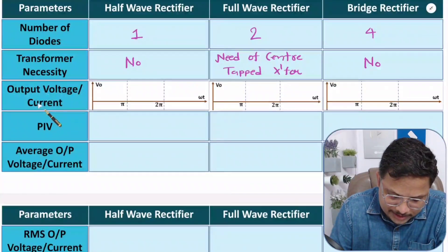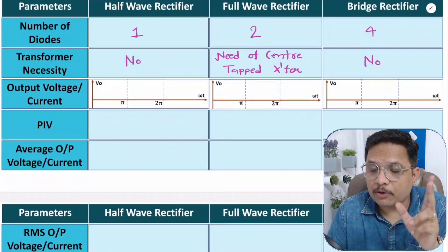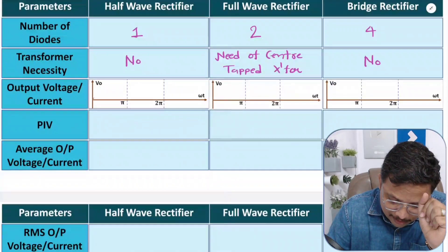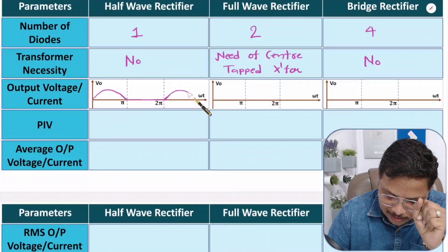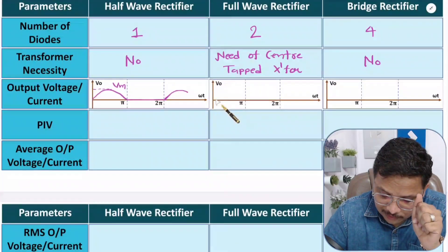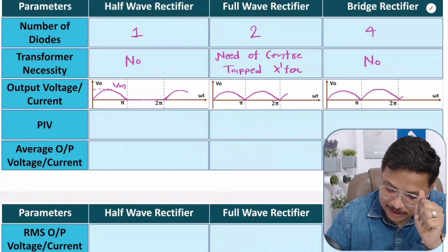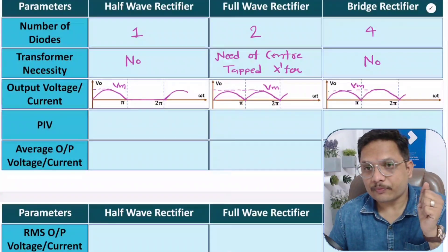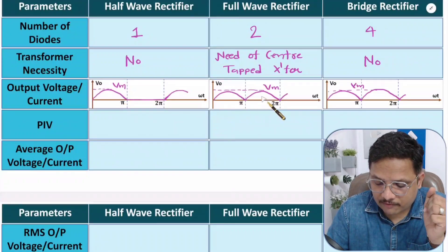Now let me explain the output voltage and current waveforms. With a half wave rectifier, there is half wave conversion from AC to DC: from 0 to π there is conversion, and from π to 2π the output is zero volts. Again from 2π to 3π there is conversion, giving output pulses where the maximum value is Vm. With full wave and bridge rectifiers, the full waveform is converted from AC to DC, with maximum voltage Vm throughout. These are the waveforms without any filters connected at the output.